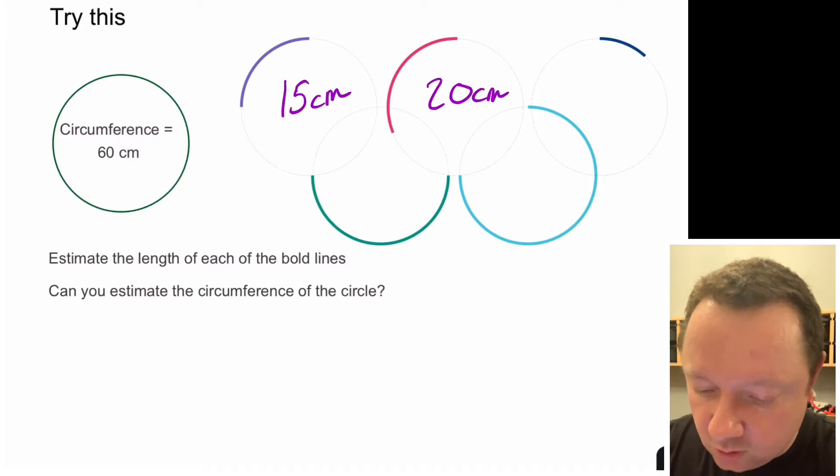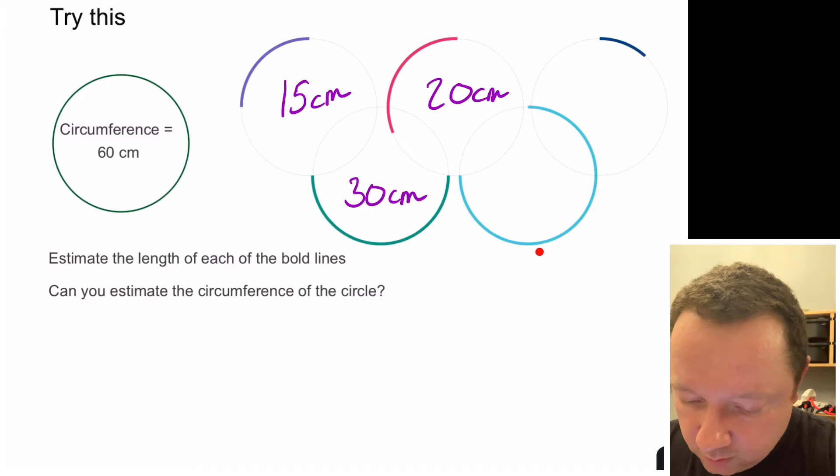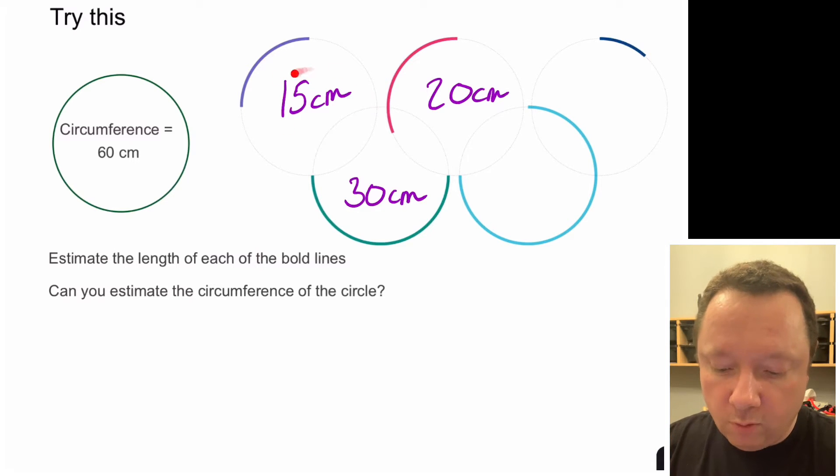Remember this is just an estimate so it's just to get a feel for what fraction of the circle this is. Looking at the one underneath it's quite clear that's about half of the circle so a half of 60 which would be about 30 centimetres. This one here I would say is half and then an extra quarter so three quarters of the circle. Three quarters would be 45 centimetres. This last one you've probably got about eight in the whole thing. So 60 divided by eight is 7.5 centimetres.